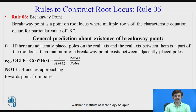Rule number six: breakaway point. A breakaway point is a point on the root locus where multiple roots of the characteristic equation occur for a particular value of K. We have three general predictions about the existence of a breakaway point. First, if there are adjacently placed poles on the real axis and the real axis between them is a part of root locus, then minimum one breakaway point exists between the adjacently placed poles.